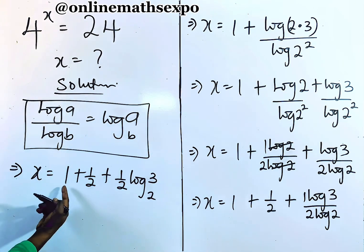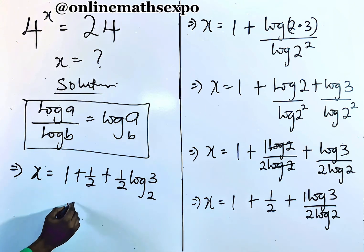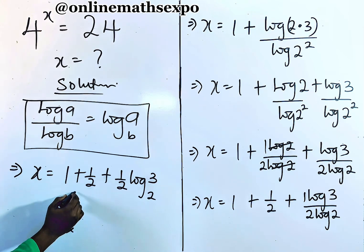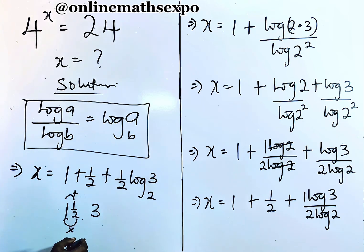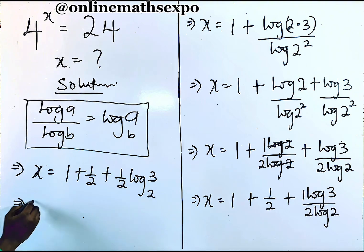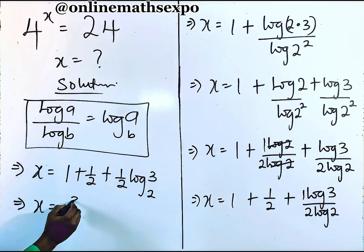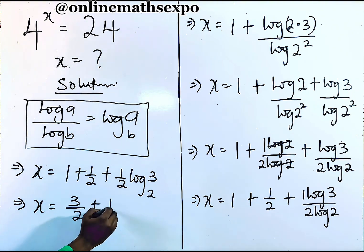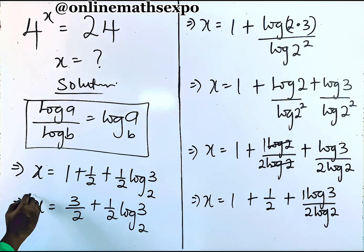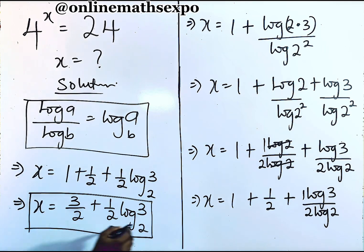We can now add: 1 plus one-half is 1 and a half, which is the same as 3 over 2. So we are having x is equal to 3/2 plus one-half of log 3 base 2. This gives us the simplified value of x.